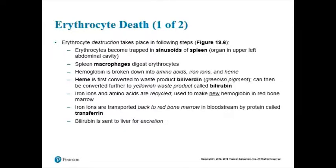Bilirubin is also a pigment. It gets broken down and eventually turns into a brownish pigment — the color of poo. When you look at the brown color in your poo, you're really looking at breakdown products of heme. So if your poos aren't brown and turn an ashy gray color, that's actually more of a blood problem — you're not breaking down hemoglobin.